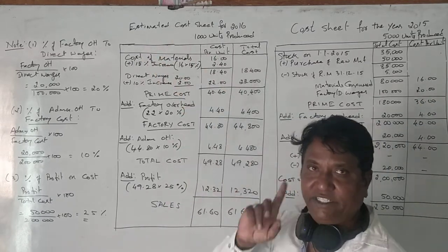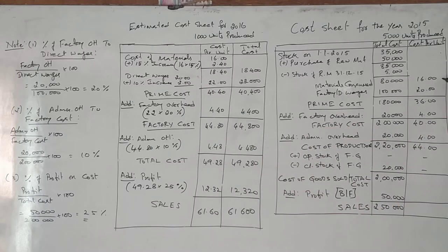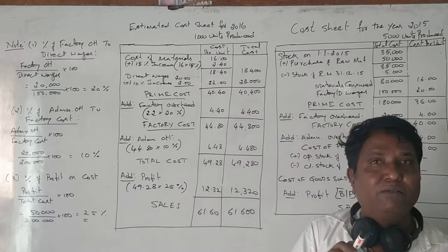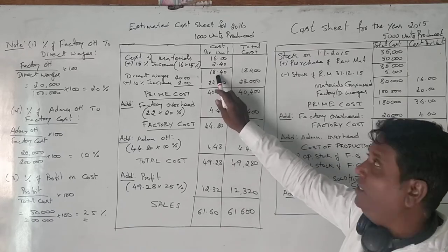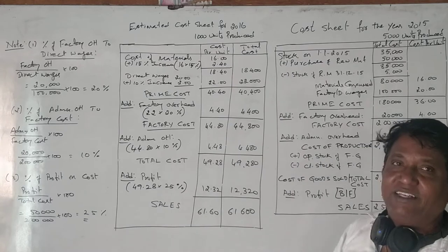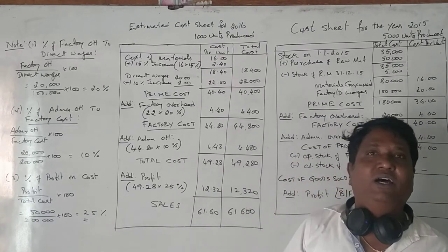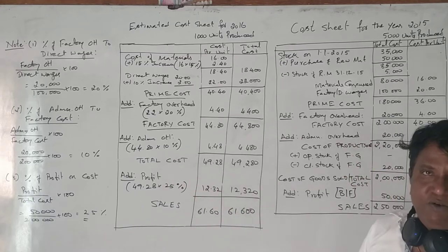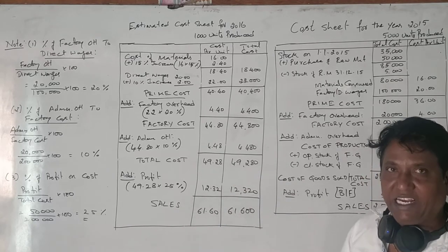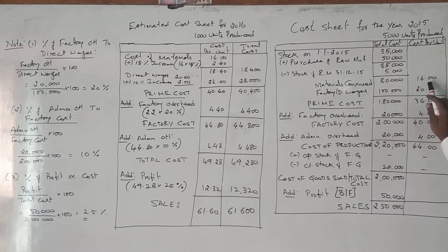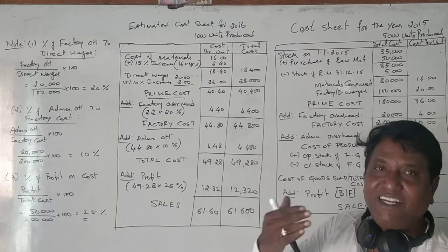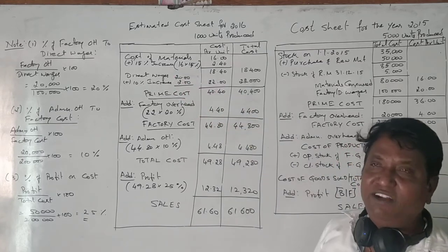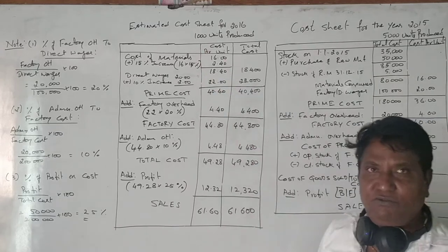When preparing the estimated cost sheet, take the cost per unit of raw material as 16 rupees. A 15% increase on 16 rupees is 2.40 rupees, so the new per unit material cost becomes 18.40 rupees. Multiplying 18.40 by 1,000 units gives a total material cost of 18,400 rupees for 2016.